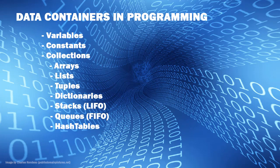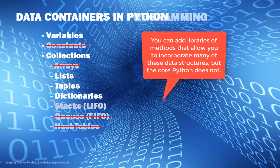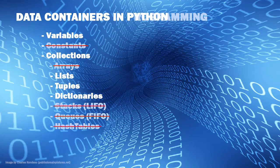Now, Python is easier to learn than most other languages — it's simpler. So in Python we don't have all of these. We have variables and we have some collections: mostly lists, tuples, and dictionaries. There are no constants in Python. You can create a variable and treat it as a constant — just don't change its value. What a lot of programmers do for constants is name them in all uppercase as a visual clue that it's a constant.